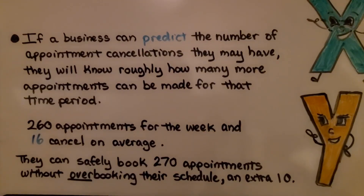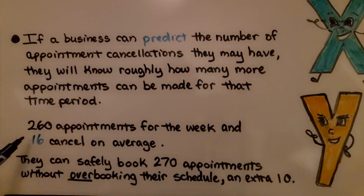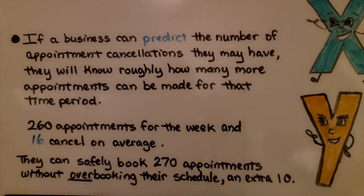If a business can predict the number of appointment cancellations they may have, they will know roughly how many more appointments can be made for that time period. If there are 260 appointments for the week and 16 cancel on average, they can safely book 270 appointments without overbooking their schedule — that would be an extra ten to make up for the sixteen that may cancel.